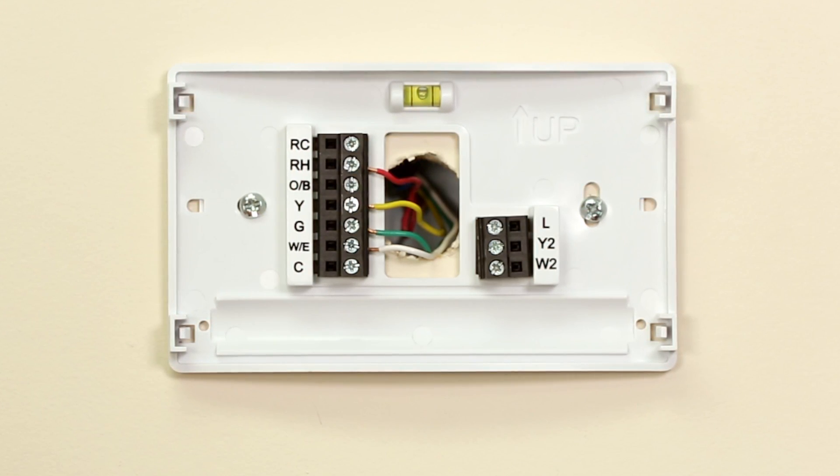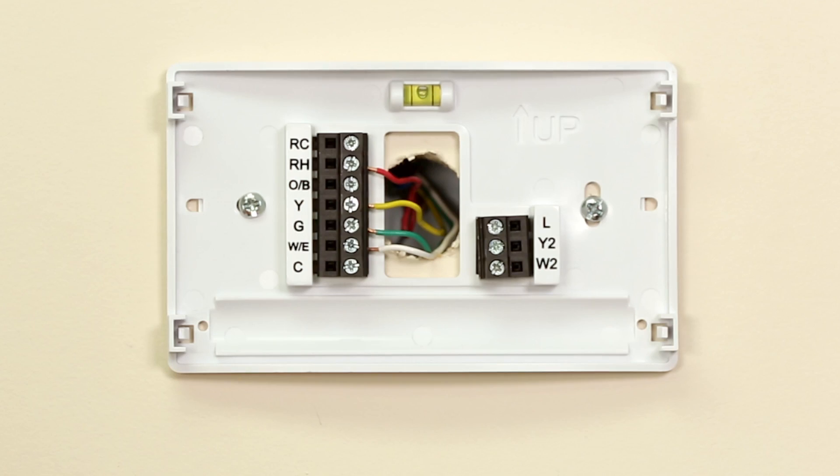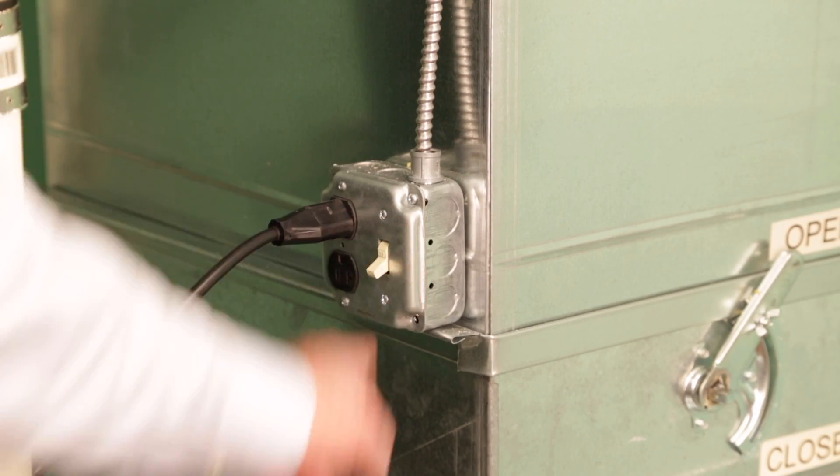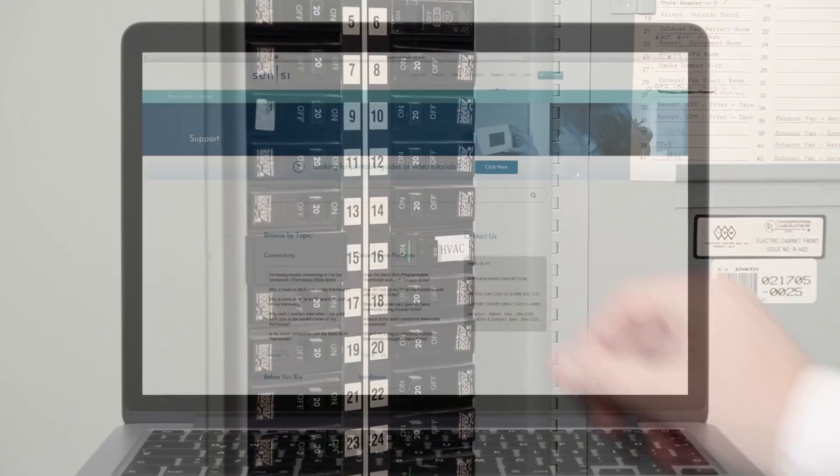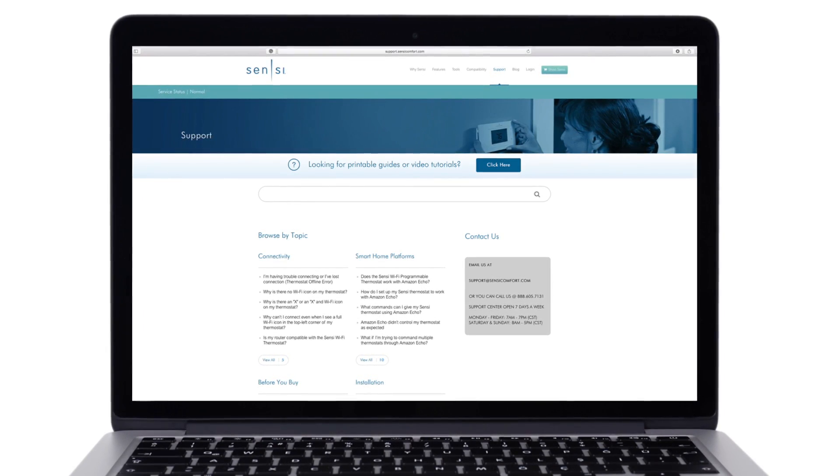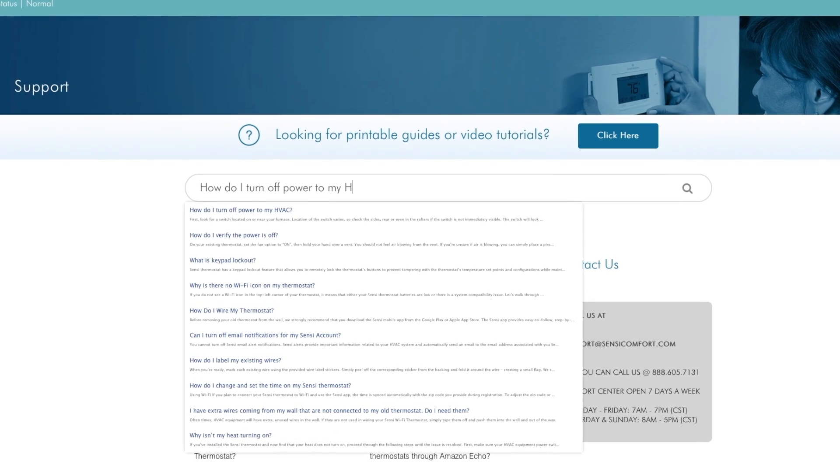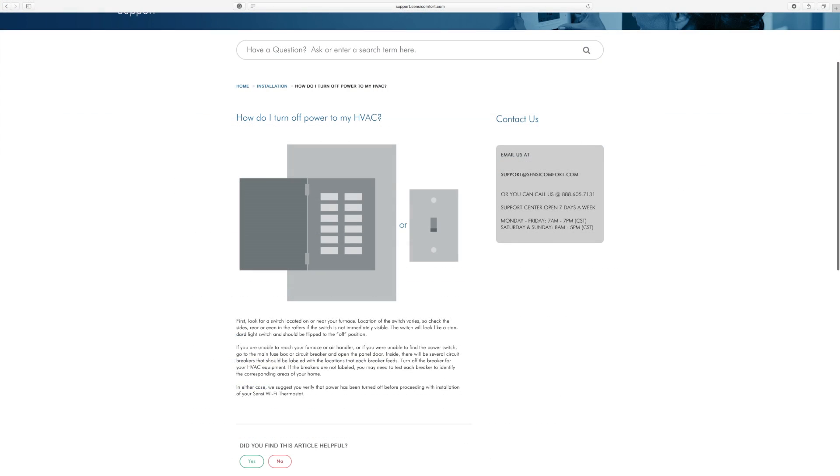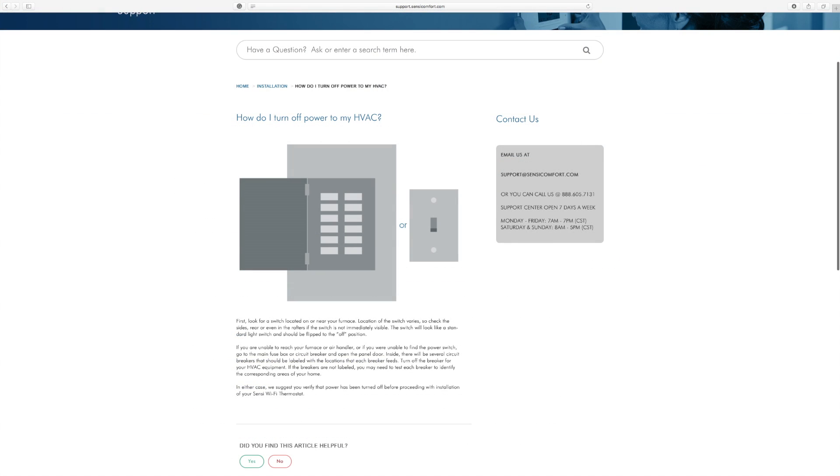Let's see if you have this unused wire and walk through how to hook it up. First, you'll want to turn the power to your system off. If you need help with this step, go to the support section of SensiComfort.com and search, How do I turn off power to my HVAC? This will show you how to properly power off your system.